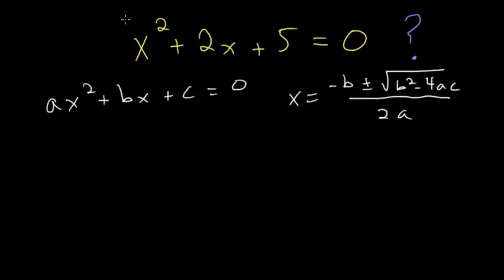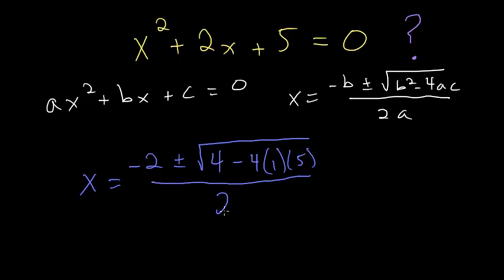The solution to this specific quadratic is x equals minus b, which is 2, so minus 2, plus or minus the square root of 2 squared minus 4 times a, which is 1, times c, which is 5, and this is all divided by twice a, or in other words, 2.